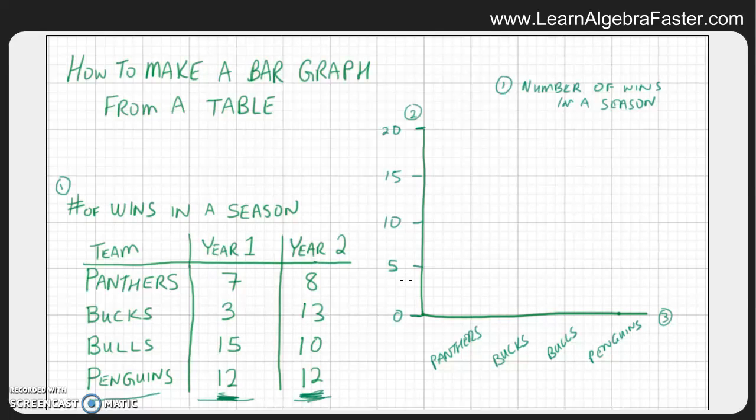Now let's look for item number four, which is the key. The key is going to show us what colors of bars represent what type of data. Here we have two sets of data—year one and year two—so we need to show that in the key. I'm going to use this green color for year one and then I'll use a different color for year two.